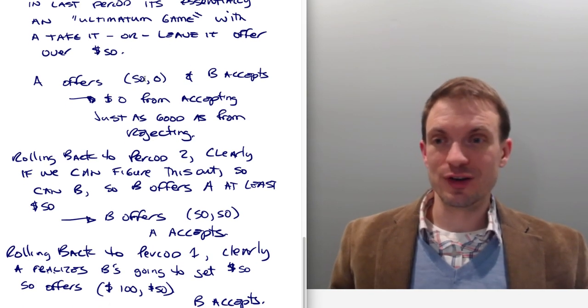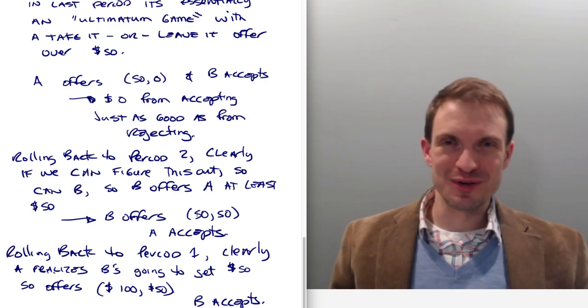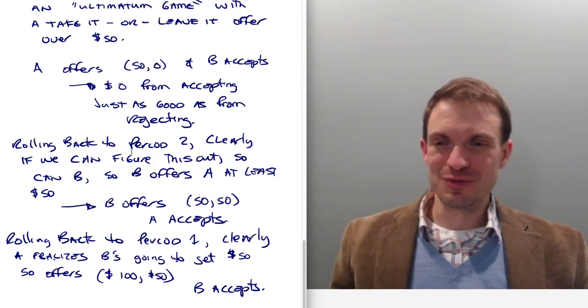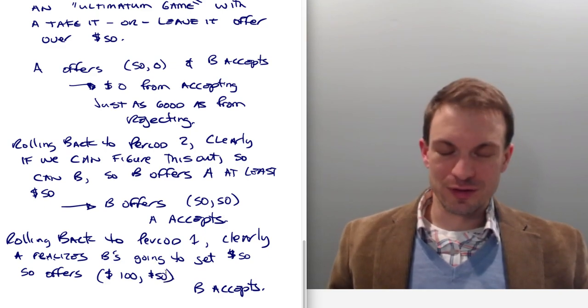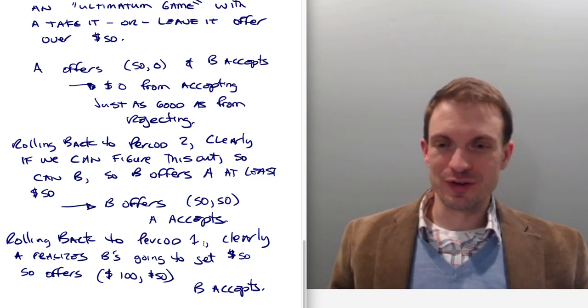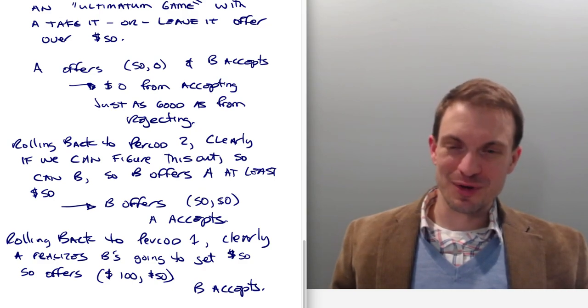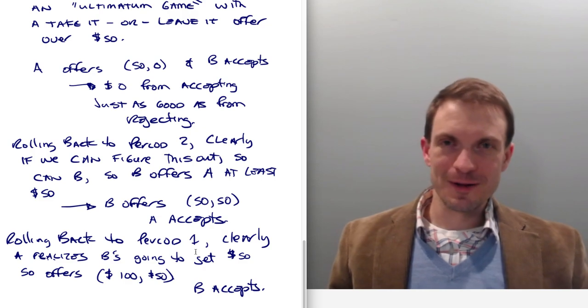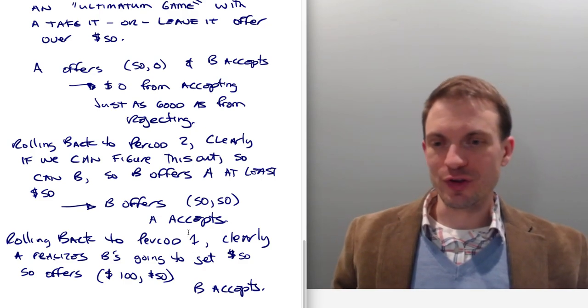Moreover, we're assuming that A is indifferent between the 50 in period three and the 50 in period two. And we're assuming that B is, moreover, indifferent between the 50 they'd get in period two and the 50 they'd get in period one. Even though, yeah, qualitatively there's some difference here because we've gone from a situation that's inequitable to a situation that's much more equitable by allowing this period to expire. But we're assuming B is not motivated by inequity aversion, or any of those other preferences.